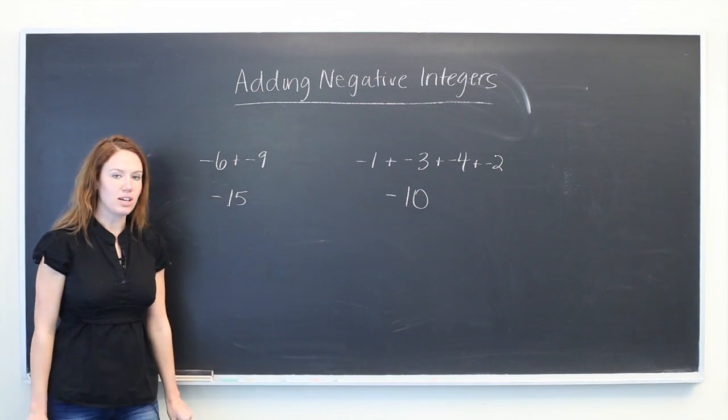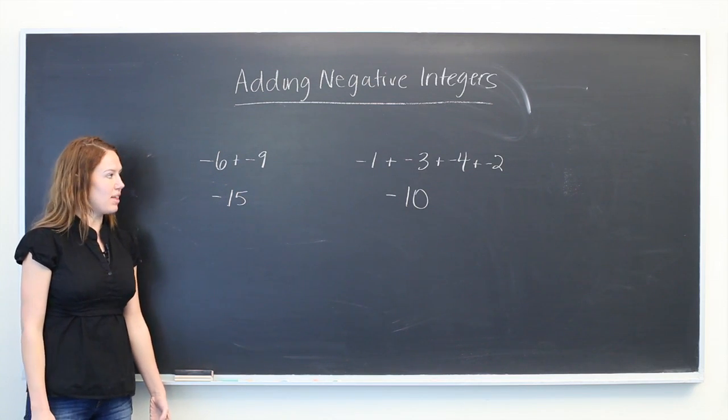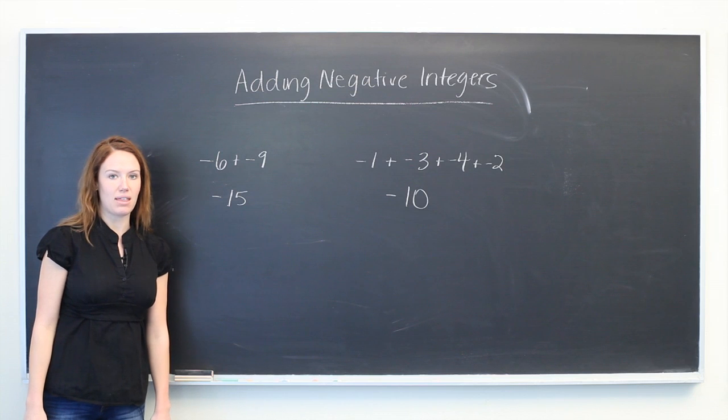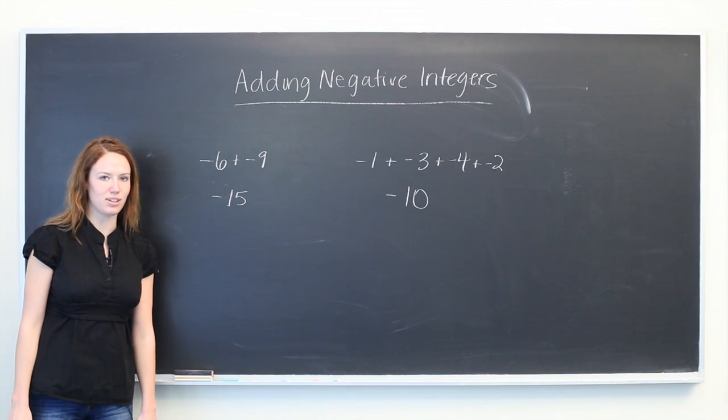So the strategy for adding negative integers is to just remember that the sum is going to be negative and then treat them as if they're positive numbers to make it a little easier for yourself.